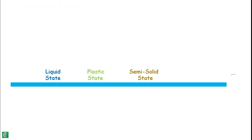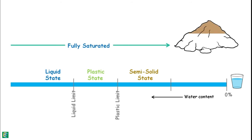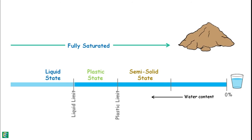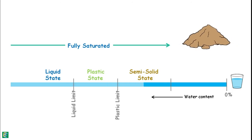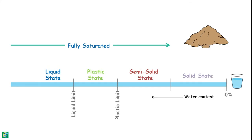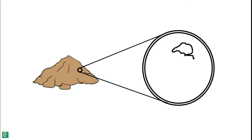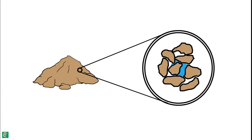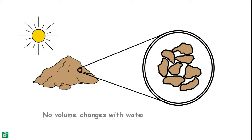From the liquid state to the semi-solid state, soil remains fully saturated. With the reduction in water content, the volume of the soil mass reduces in almost equal amounts, until a stage is reached when further reduction of water content does not cause any reduction in volume. At that point, the soil mass changes from semi-solid state to solid state, developing pores that are partially filled with water. If we then dry the soil further, its volume remains the same but pore water gets reduced — no volume changes occur and the soil does not shrink anymore.